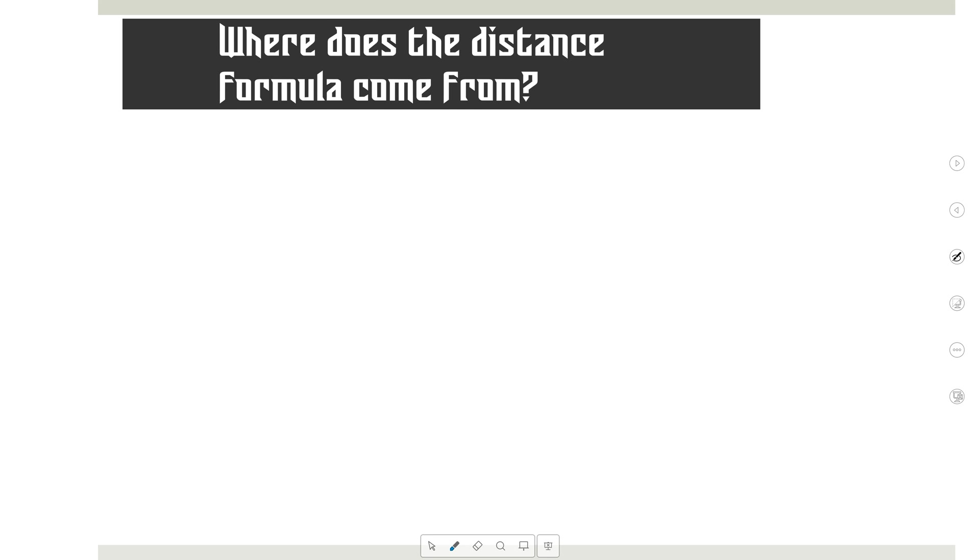The nice thing about Pythagorean Theorem is there's no other possibilities. You're given the two legs you solve for the hypotenuse. You're given a leg and a hypotenuse you solve for the other leg. That's it. So you seem to have mastered that. We're good? Can we move on? Beautiful. So we're going to do the distance formula.